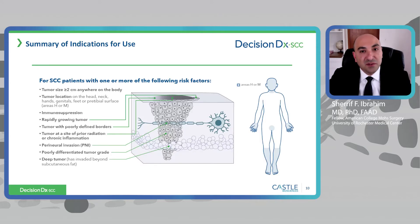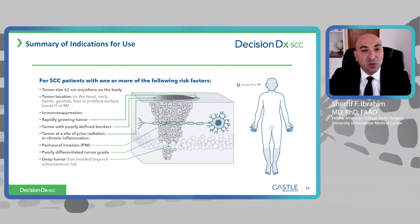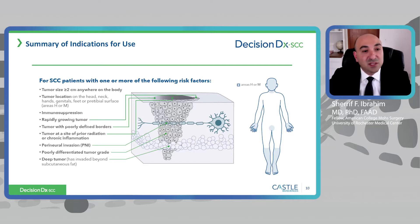As for indications for use, this is not a test meant for every patient with squamous cell carcinoma. It is validated in patients with one or more of the following risk factors: large tumor sizes, location in the H or M areas of the head, neck, hands, genitals, feet, or pre-tibial surface, patient risk factors such as immunosuppression, and histologic factors including perineural invasion, poorly differentiated histology, depth of invasion, and aggressive histologic subtypes.